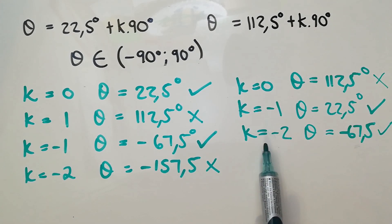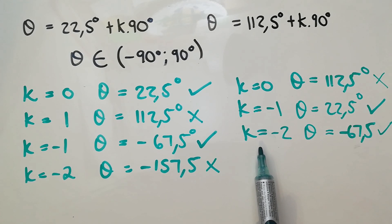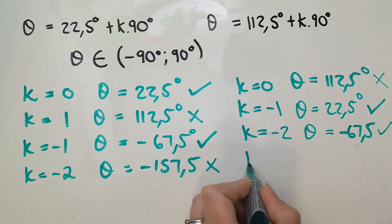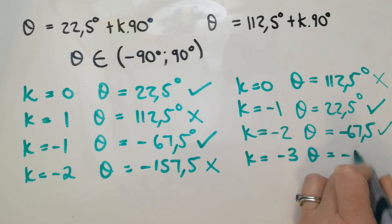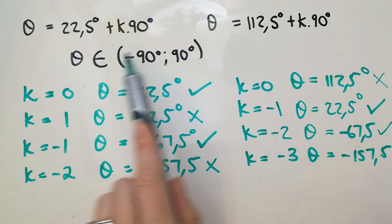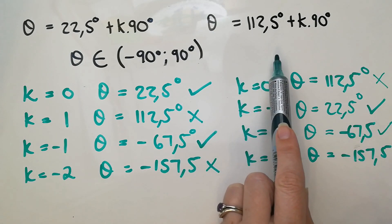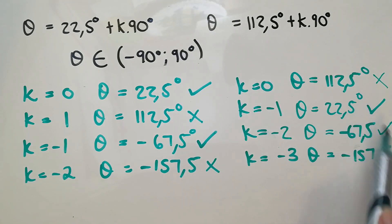Should I do the negative three? You can try that. You can go back to your calculator and just change the negative two to negative three. And that gets me to negative 157.5, which is too big.